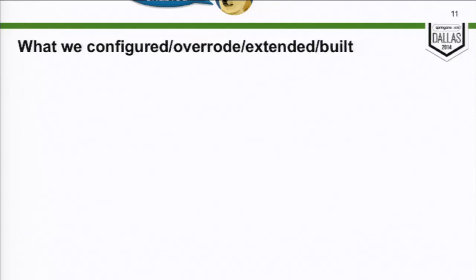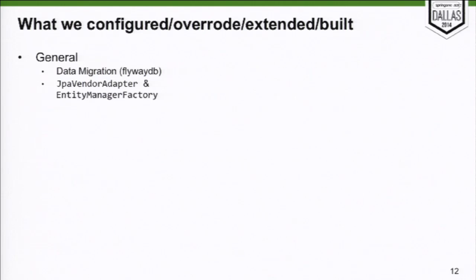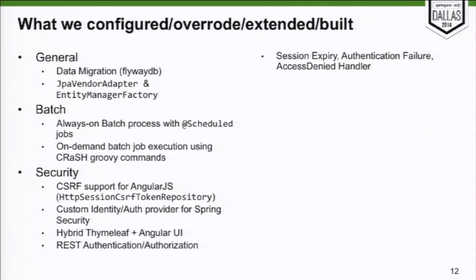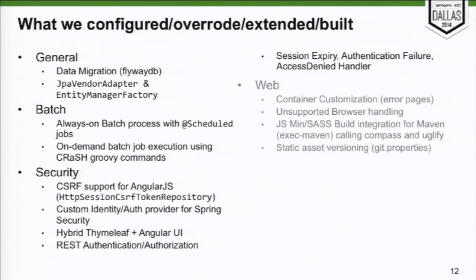We did have to do some overrides and configuration changes. We do data migration, we customize our entity manager and the JPA factory. Our batch process runs as a system process and runs for weeks on end — we use @Scheduled to run jobs. We can SSH into the batch process and run Groovy commands to execute things ad hoc. Security is one of those things we had to put a lot of effort into customizing because we had a very unique scenario — thanks Boot, but we're going to do our own thing there.